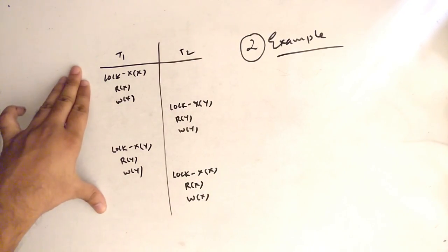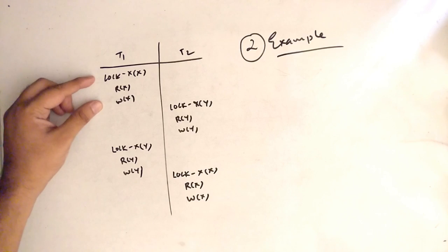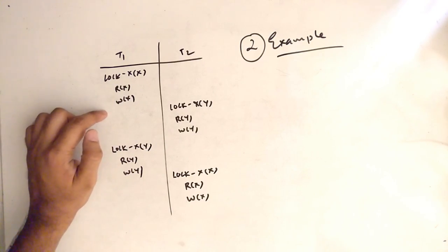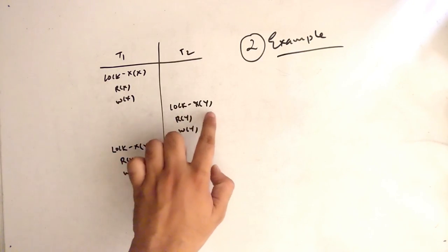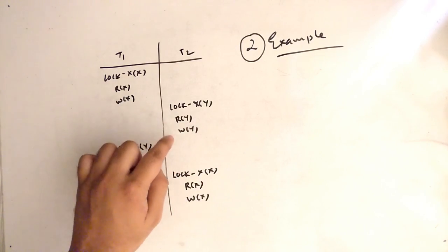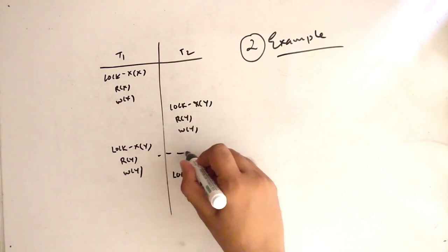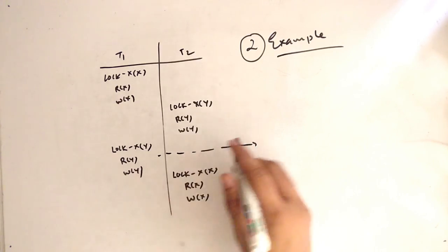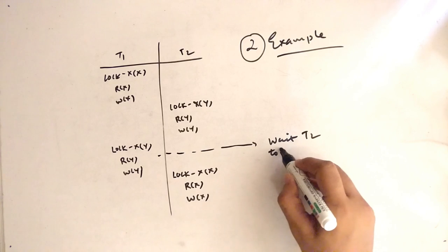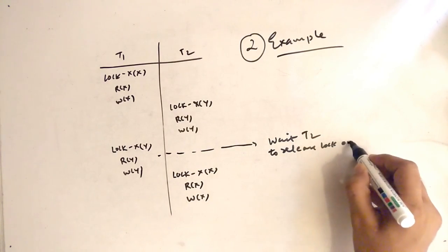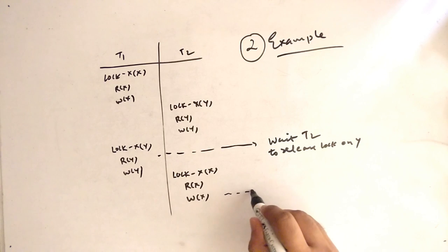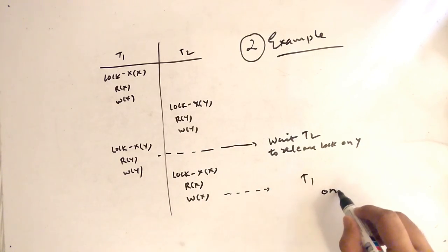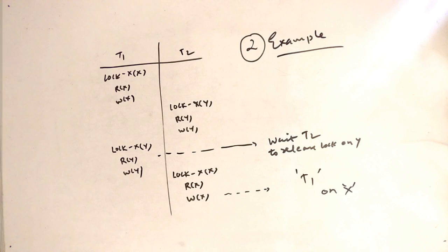For the example, we have transaction T1 and transaction T2. In T1 we have: lock X on resource X, read X, write X — so we are reading and writing on resource X. In T2 we have: lock X on Y, read Y, write Y — reading and writing on resource Y. The problem is that lock Y is not released, so T1 is waiting for T2 to release the lock on resource Y. Similarly, T2 is waiting for T1 to release the lock on resource X. This is a deadlock.